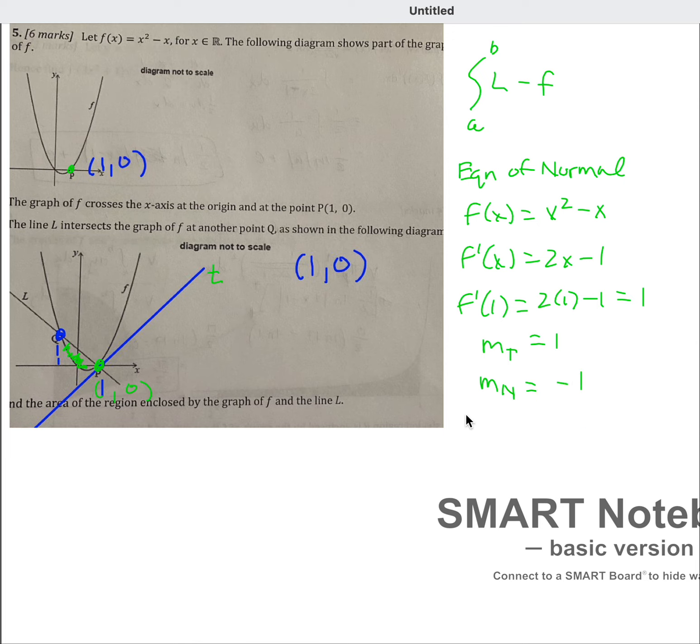So the equation of the normal, I'm going to move over here. So that means the equation of normal, right, we have the point 1, 0, we have a slope of negative 1, so that's going to be y equals negative x plus 1.